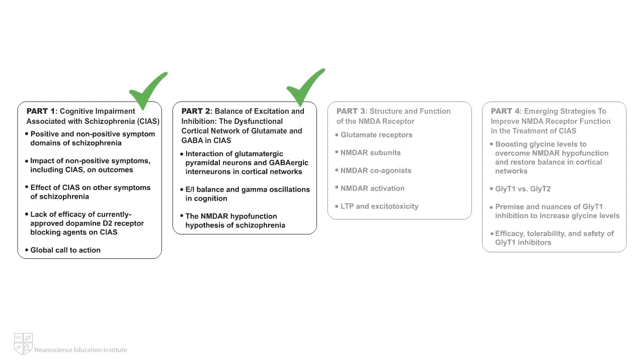CIAS, we explored the intricate excitatory-inhibitory balance between glutamatergic pyramidal neurons and PV-plus gabaergic interneurons in the prefrontal cortex. We also discussed how hypothetical N-methyldeaspartate receptor, NMDAR, hypofunctioning in schizophrenia may disrupt this EI balance and cause the cortical network asynchrony believed to contribute to CIAS.